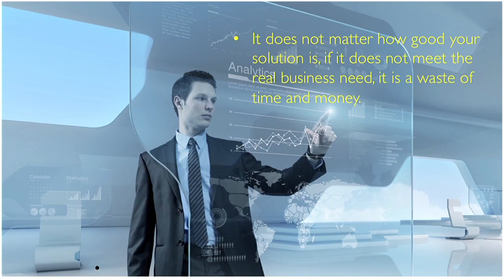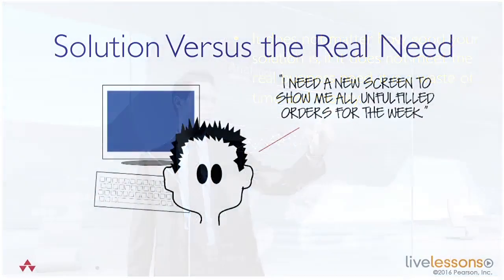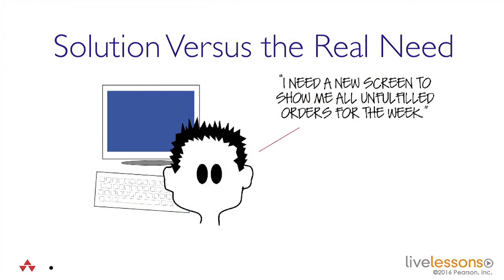If it doesn't meet the real business need, it is a waste of time and money. So regardless of the glitzy technology, it has to solve the right problem. Now there's a difference between the solution and the real need, or I could say the difference between the solution and the requirement. This is a fairly typical situation — a business user saying, I need a new screen to show me all the unfilled orders for the week. You're talking to a stakeholder and they give you a solution rather than a need.